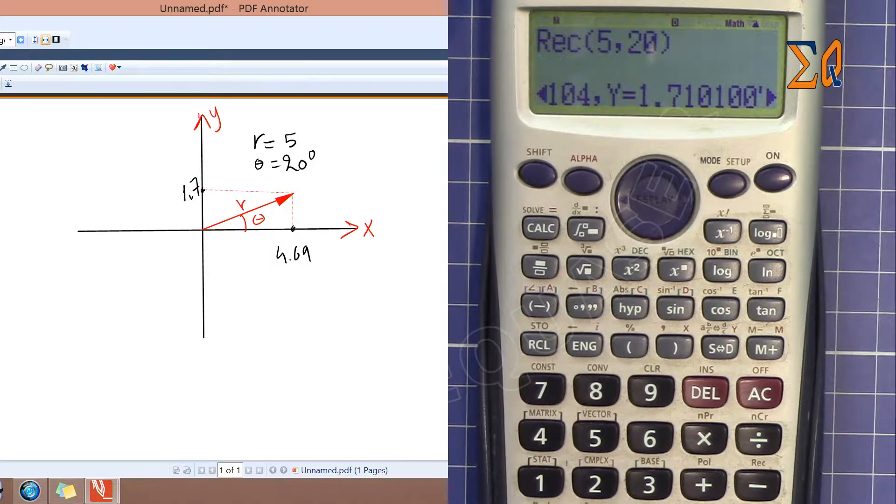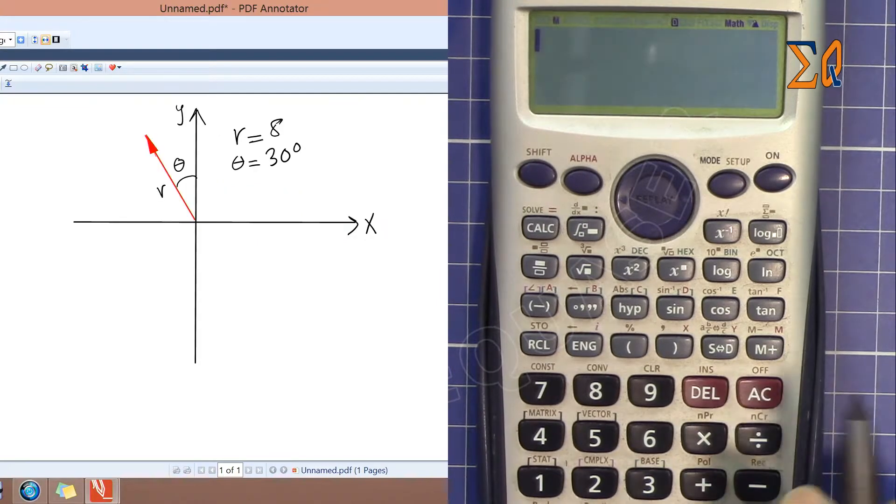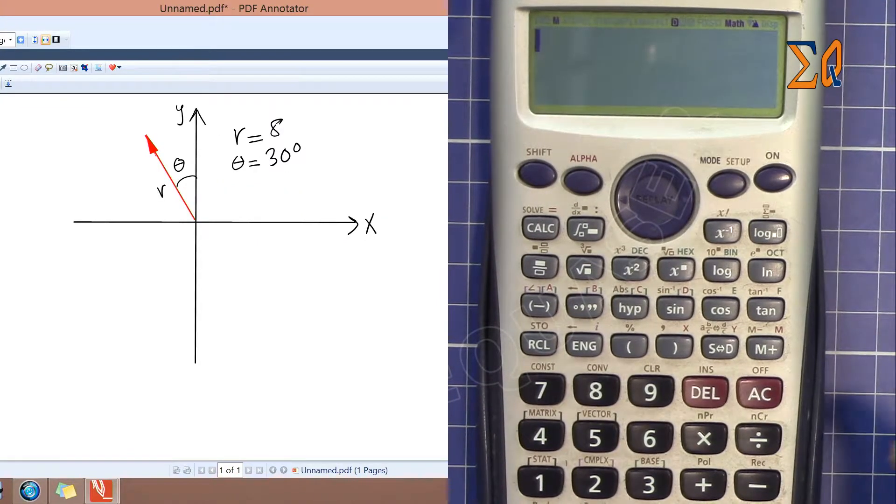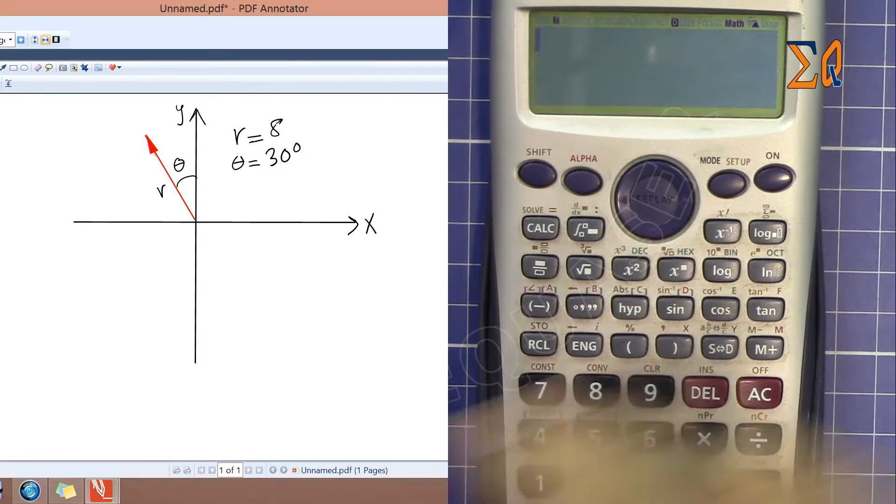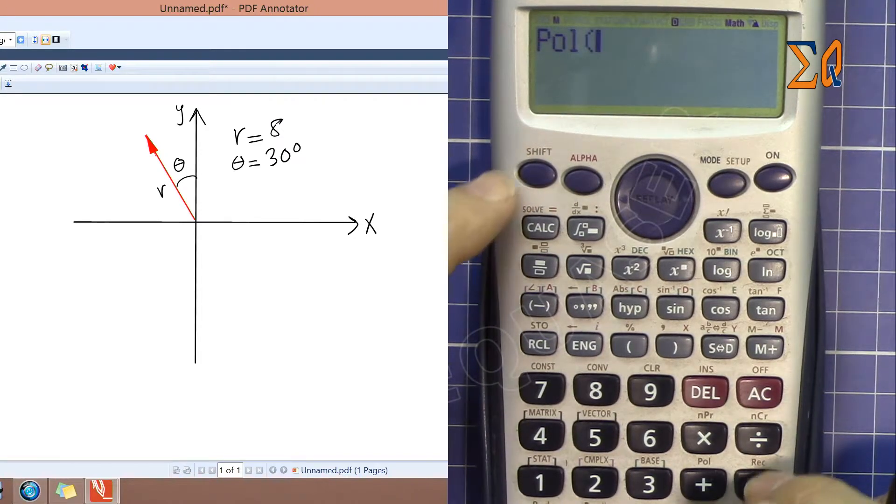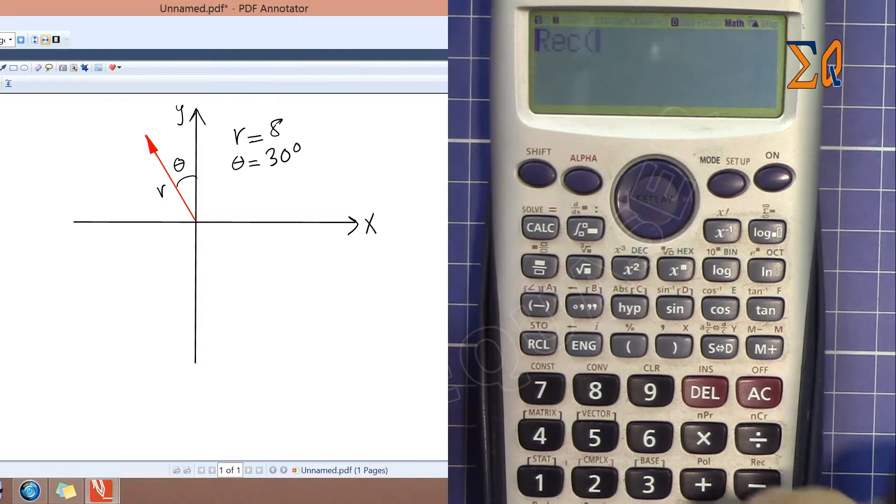So this is the correct way to do the calculation. Now let's do this one. If you look here, R is 8 and angle is 30 degrees. So let's do it. Press shift and rectangle.